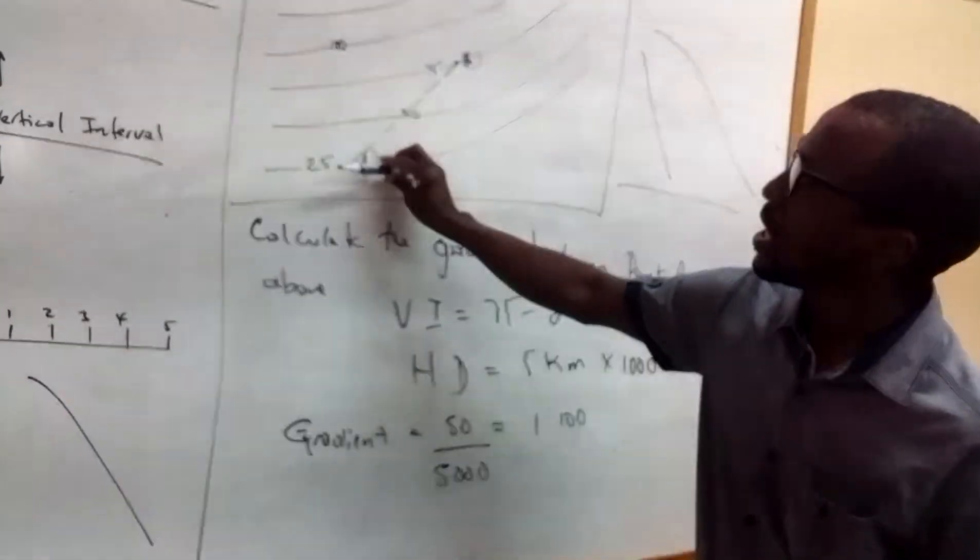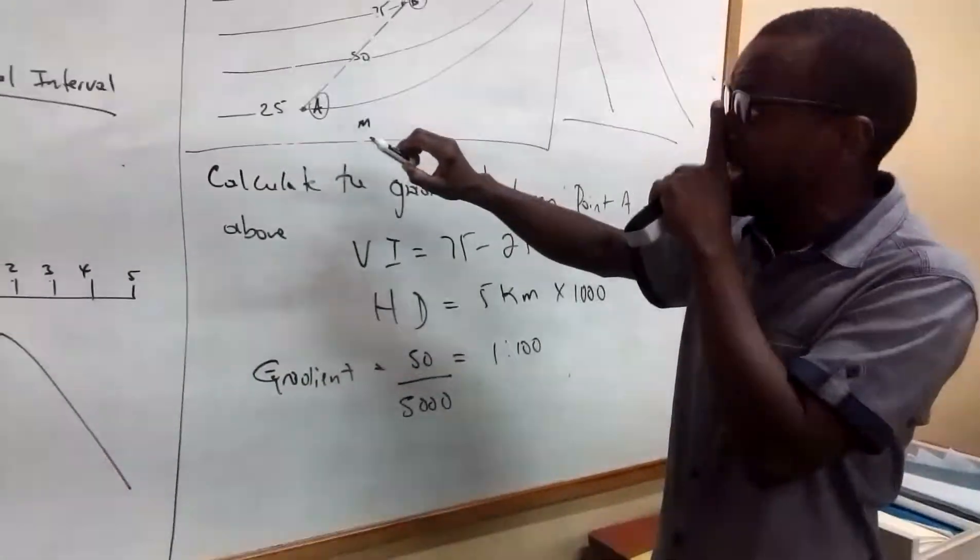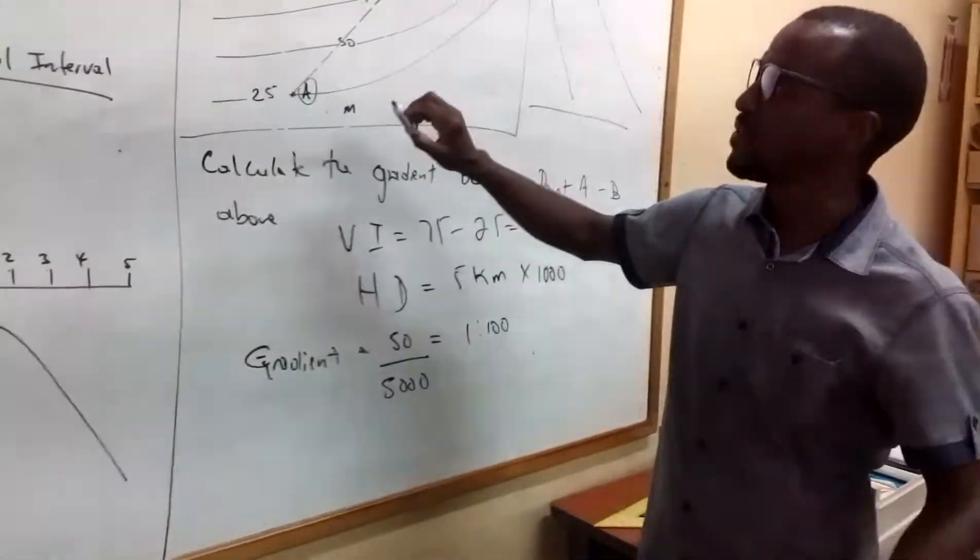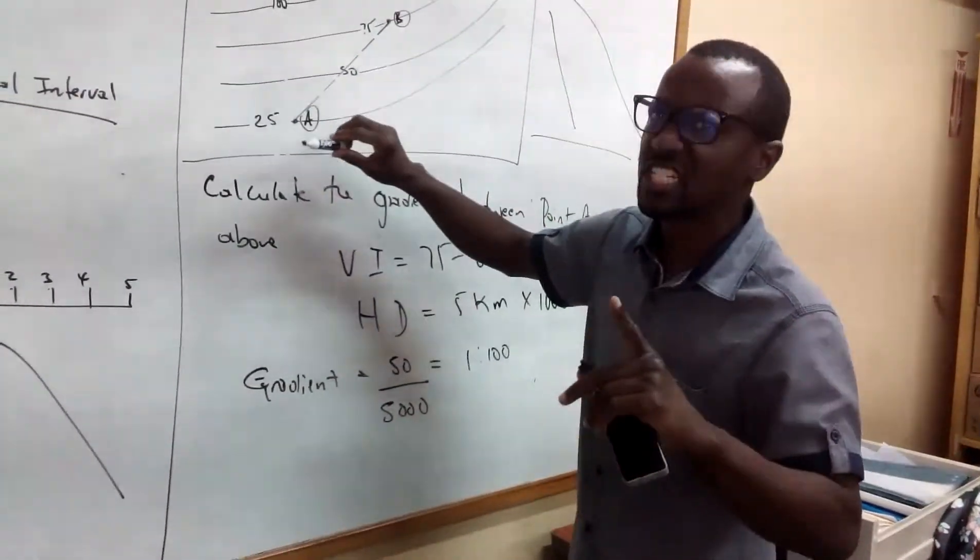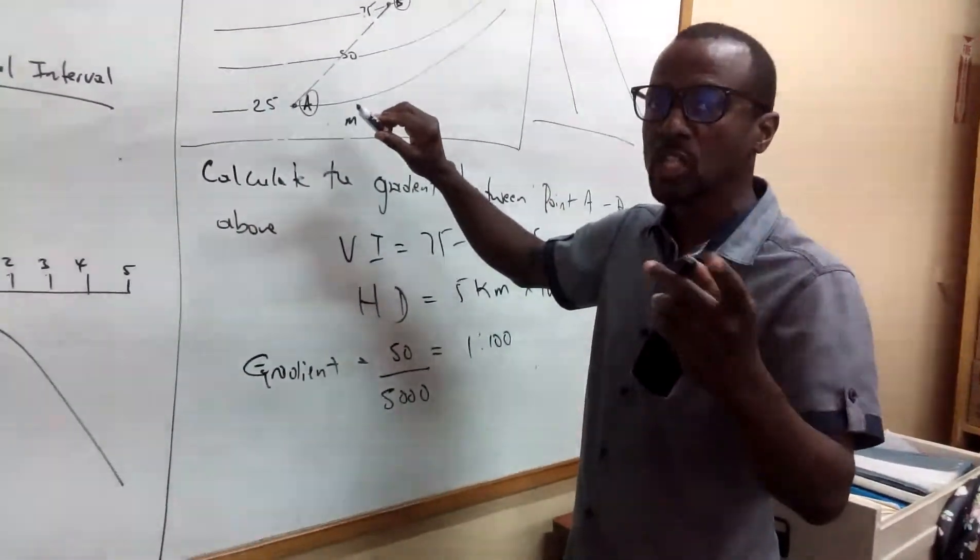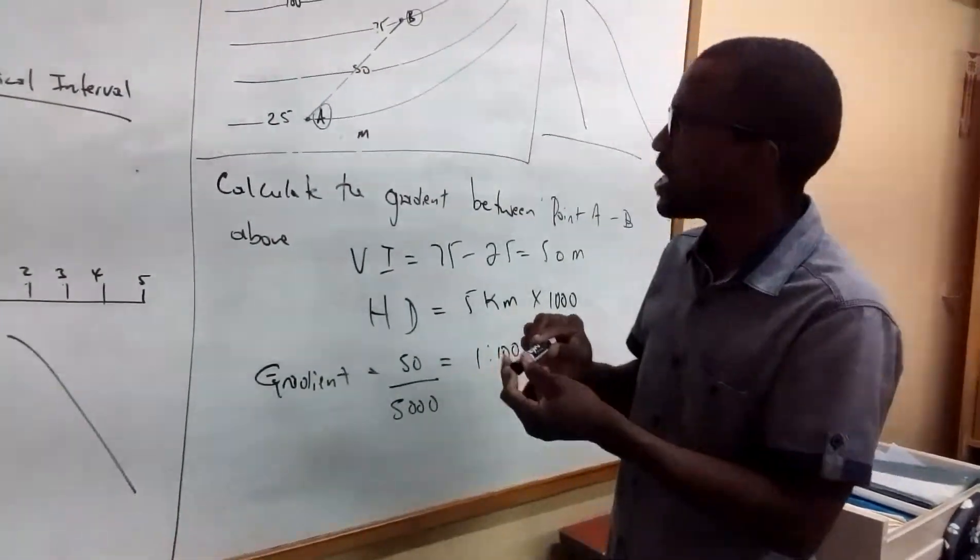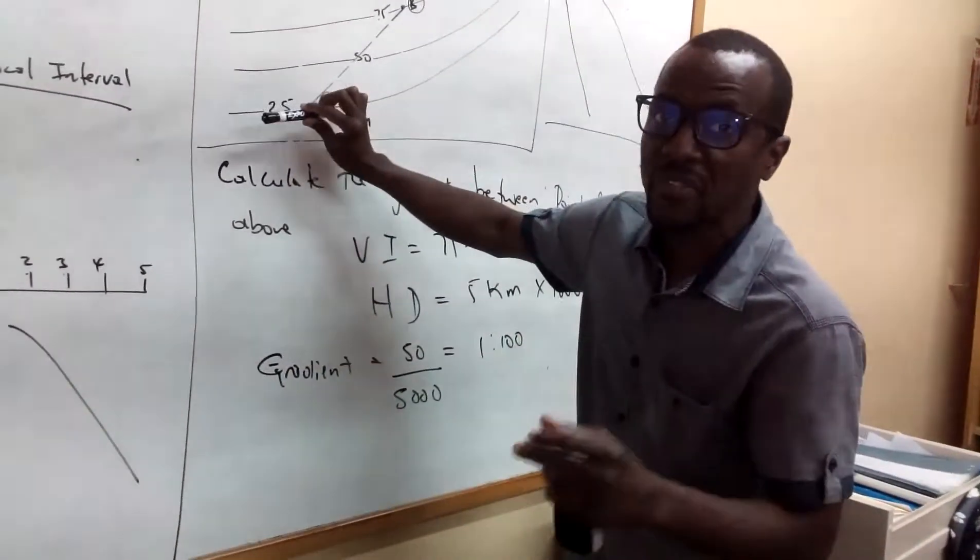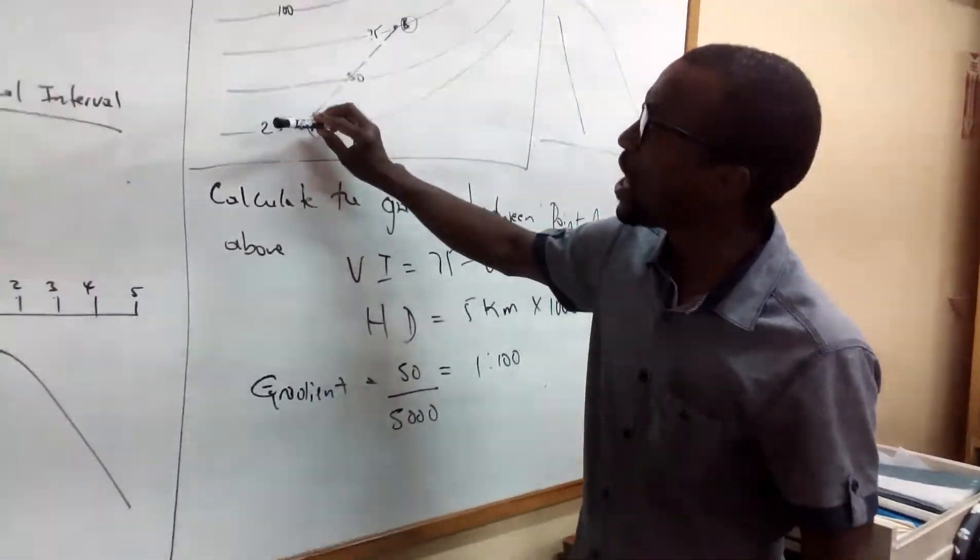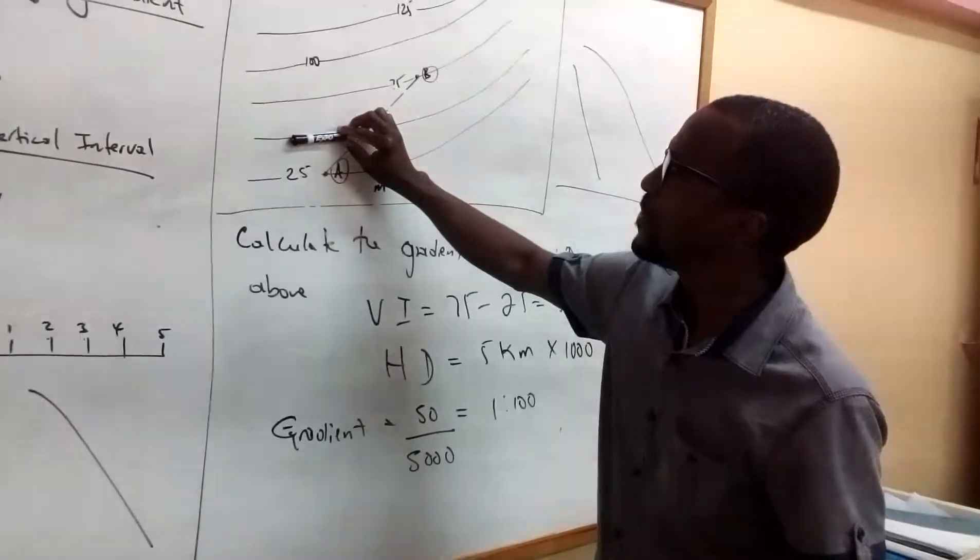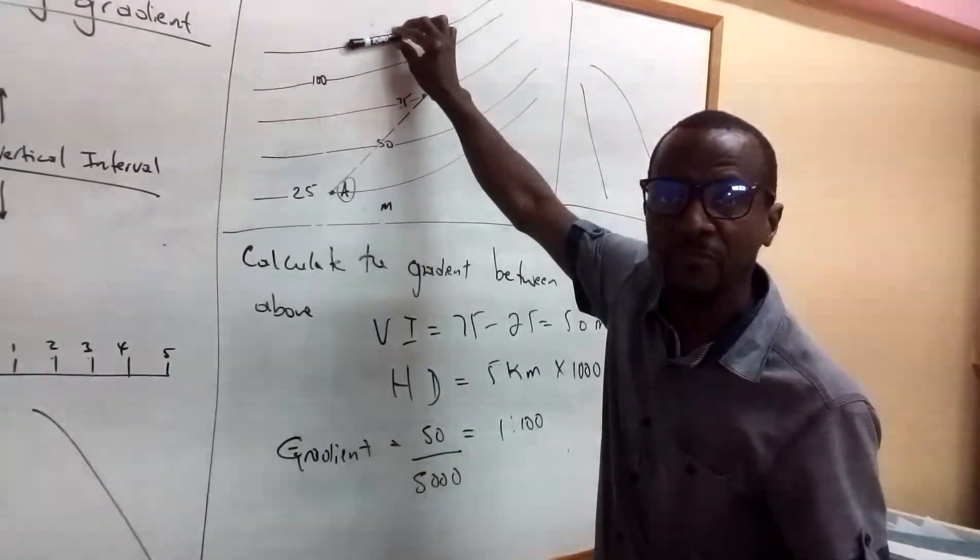Now the gradient, you want to calculate the gradient. So the VI which is the vertical interval refers to the contours, should I say, the space, the measurement of the contours between one contour line to another. So in this case it is 25, the contours actually move up by 25. So here you have 25, 50, 75, 100, 125.